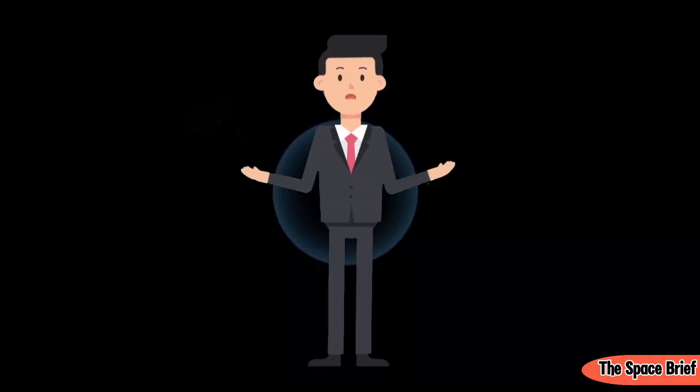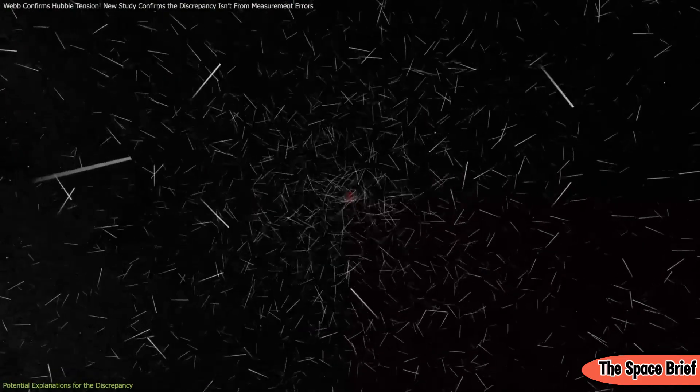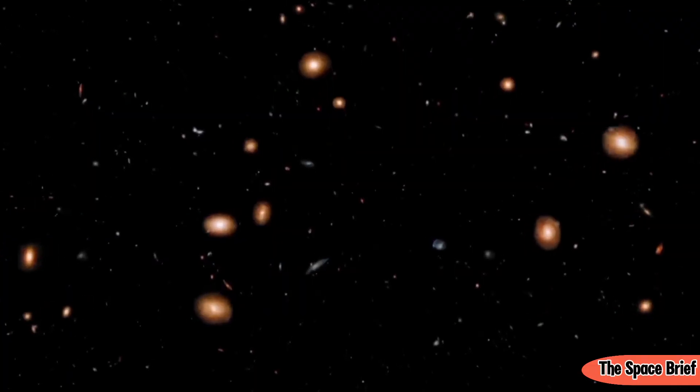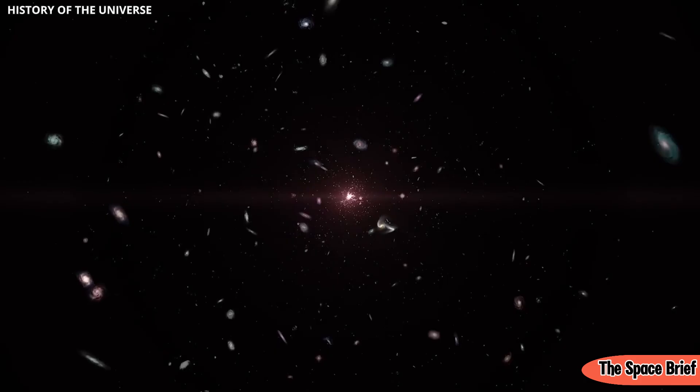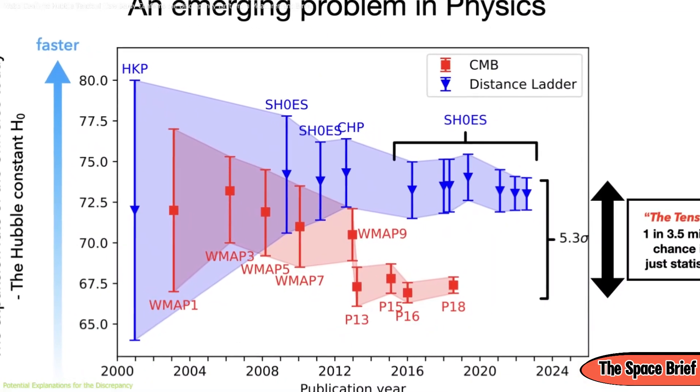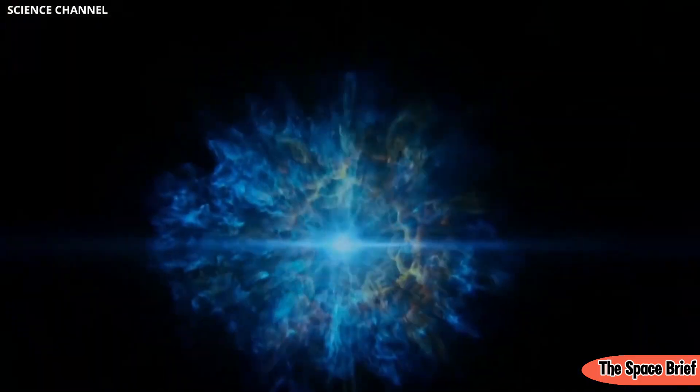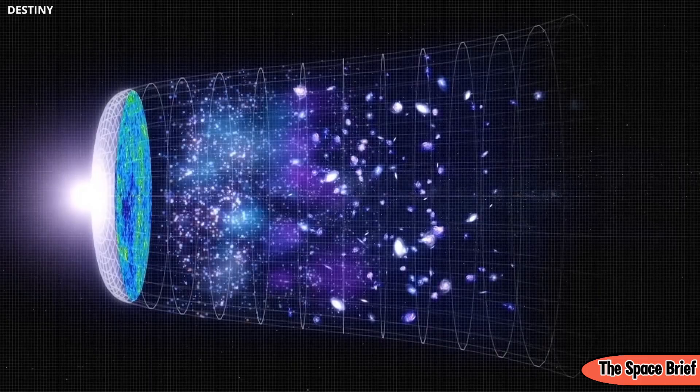Gravitational waves, ripples in spacetime caused by cataclysmic events like binary neutron star mergers, serve as standard sirens. These signals provide a direct measurement of distance, free from many of the biases associated with traditional methods like Cepheid variables or supernovae. By integrating gravitational wave data with electromagnetic observations, scientists hope to achieve a third perspective on the Hubble tension.